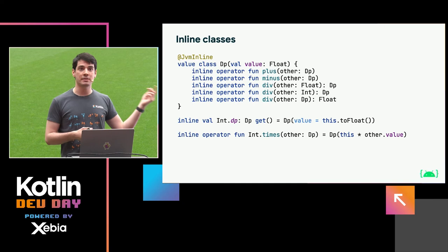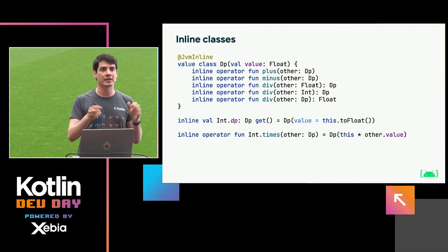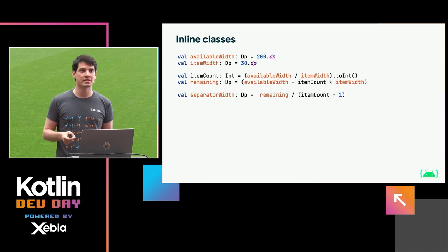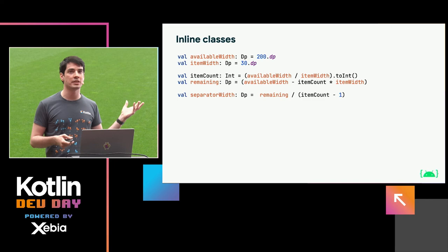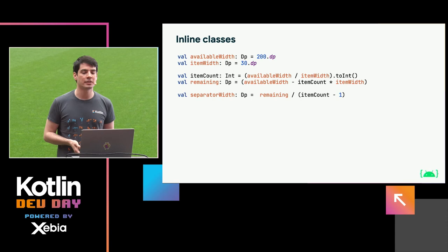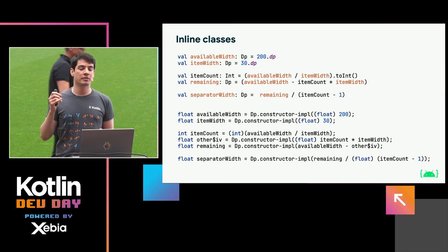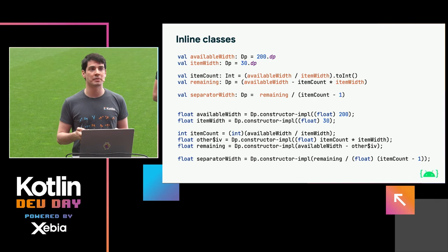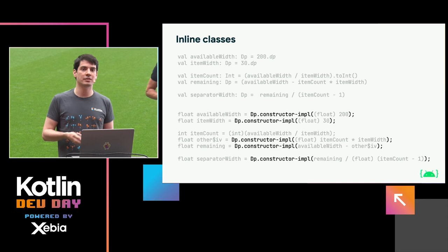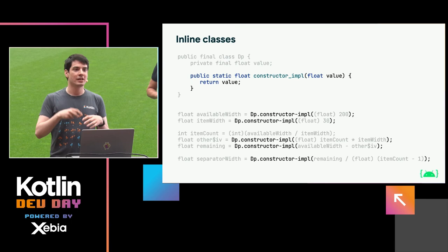Because everything's inline, once you start doing operations and calculations with dp units — dividing, multiplying, subtracting them, and so on — if we compile this and take a look at the decompiled bytecode, we'll see that everything is just floats and ints. We're not creating any objects for these calculations and we're barely calling any functions. All of this is just primitive types and operations on those primitives. We are calling one function — the constructor impulse generated for the Dp type — but that's a static function returning the float it receives, so it gets optimized very quickly at runtime.